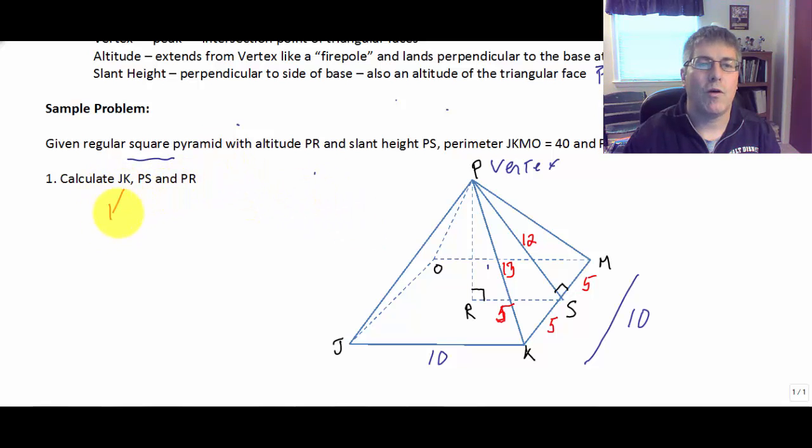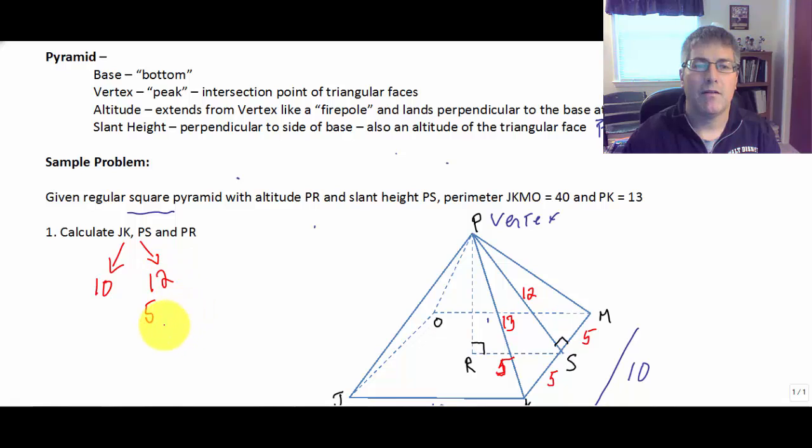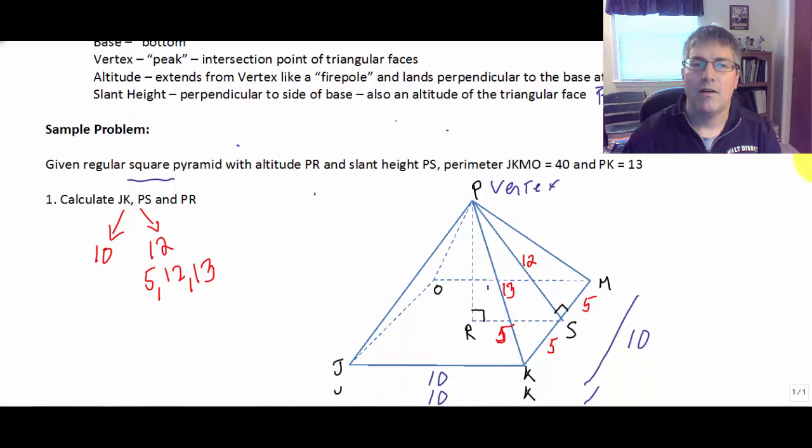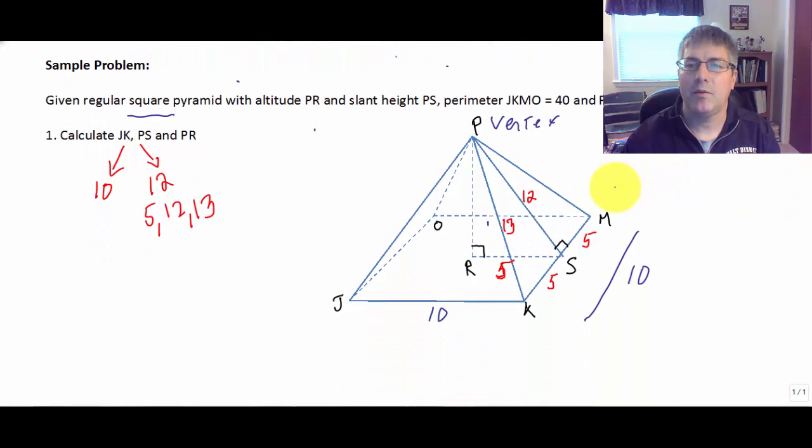We want to calculate JK. That was 10. We want to calculate PS. Well, PS is our slant height. That is 12 from a 5, 12, 13. And then finally, we want to calculate PR.